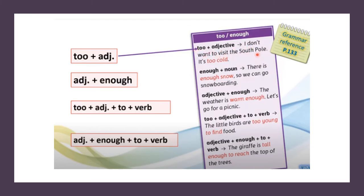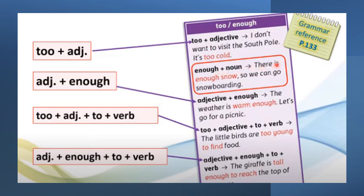Now let's go to our grammar reference, page 133. 'Too' plus the adjective: 'I don't want to visit the South Pole — it's too cold.' So we use 'too' because of the negative reason. Adjective plus 'enough': 'The weather is warm enough — let's go for a picnic.' We can also say 'enough' plus the noun: 'There is enough snow, so we can go snowboarding.'